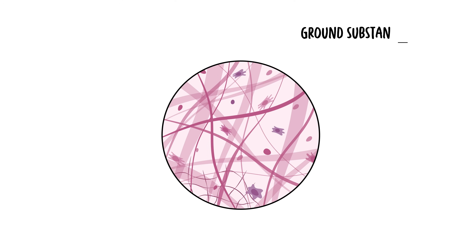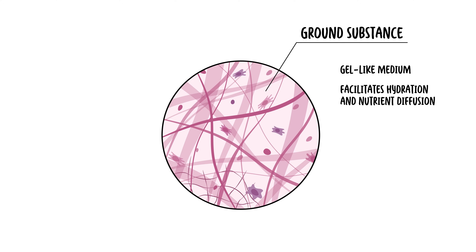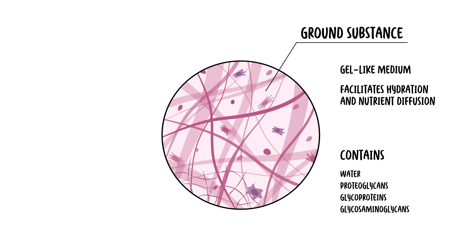Now, ground substance, which is the other part of connective tissue, is like a gel-like medium which facilitates hydration and nutrient diffusion. It contains water, proteoglycans, glycoproteins, and glycosaminoglycans. The fiber is the other important part of the extracellular matrix, together with the ground substance.